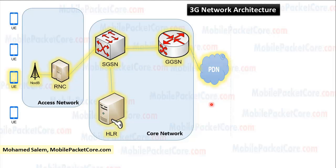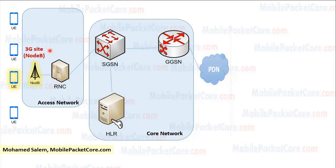Now let's take a look at network architecture in 3G. The core network is the same in 2G and 3G networks. The difference exists only in the access network. In 3G, the UE connects to the 3G site. The name of the 3G site is the Node B.